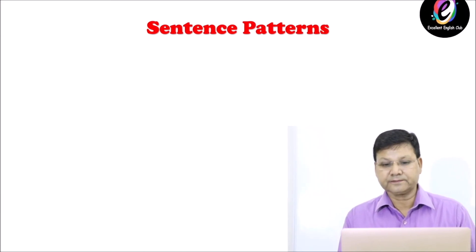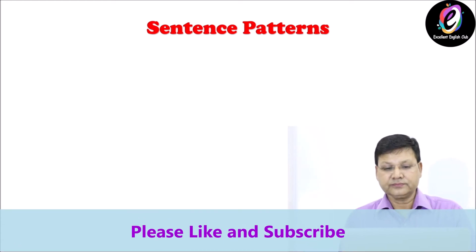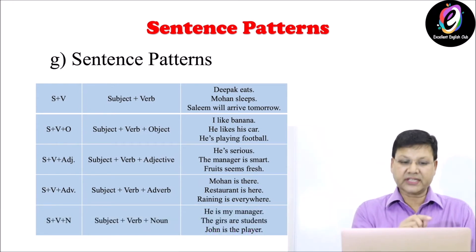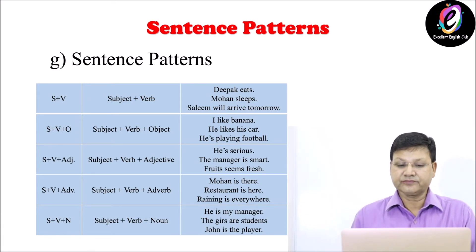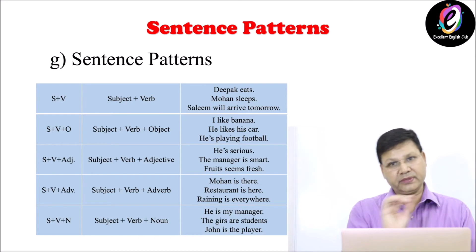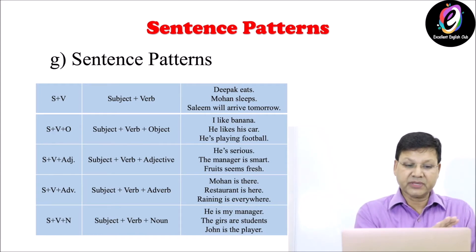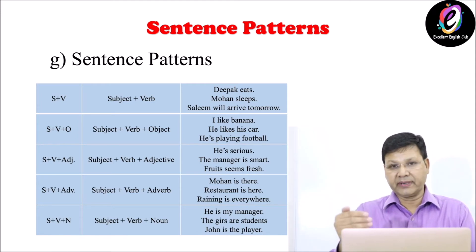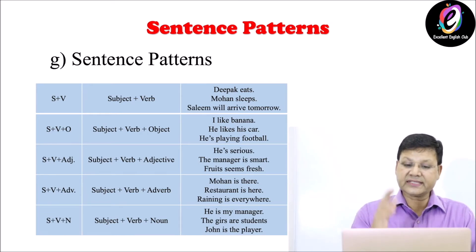Move to the next element: sentence patterns. Sentence patterns are formulas. First formula: subject plus verb. For example, 'Deepak eats,' 'Mohan sleeps,' 'Salim will arrive tomorrow.' Second pattern: subject plus verb plus object. For example, 'I like banana,' 'He likes his car,' 'He is playing football.'